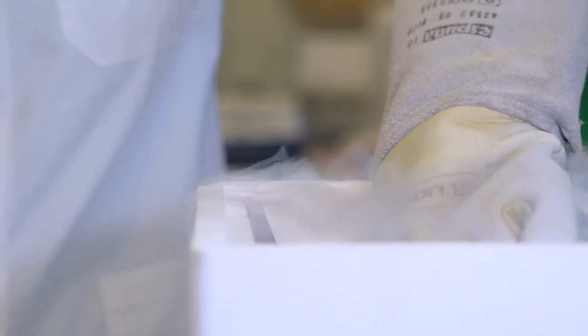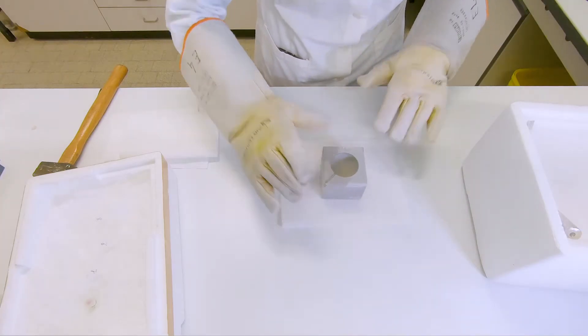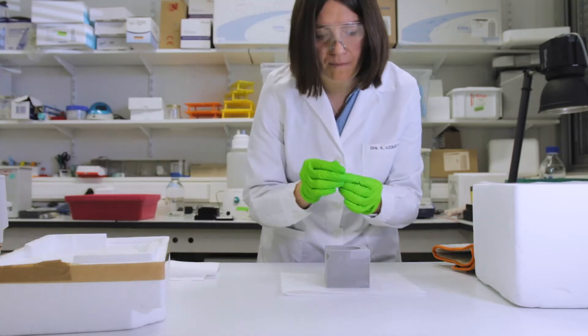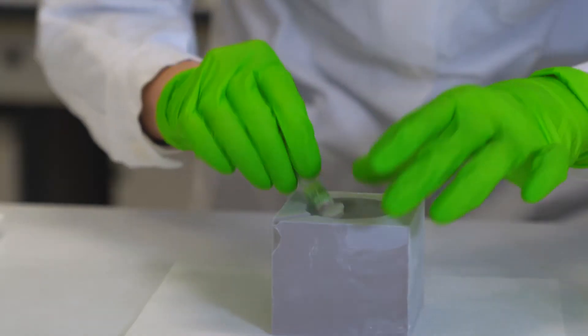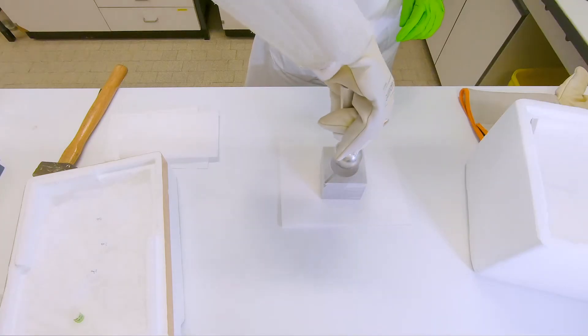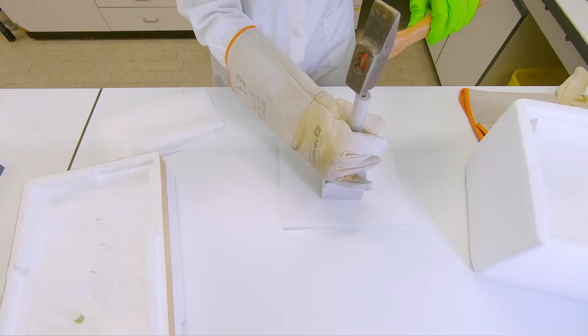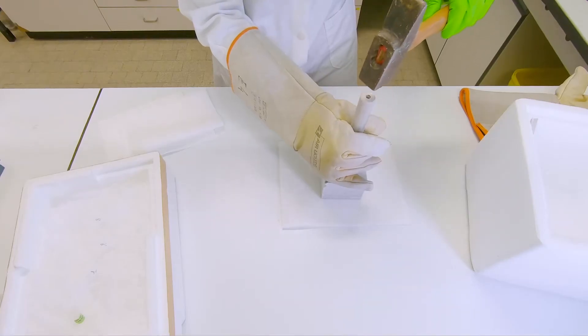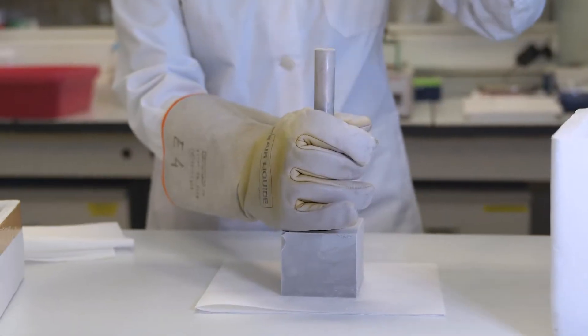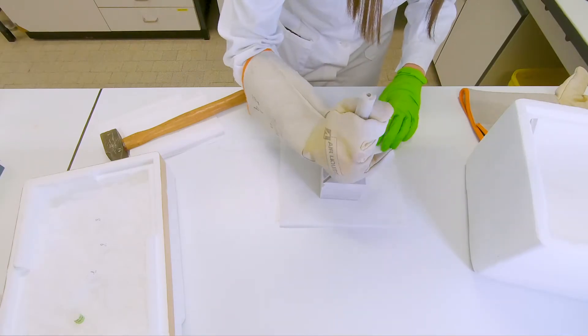So after the liquid nitrogen stops bubbling, you take out the mortar. So first the cup. You put the frozen tissue inside, and then you take out the pestle. So with a hammer, we will smash once, twice, and then you can use the pestle to grind the tissue some more.